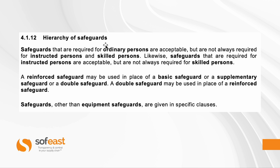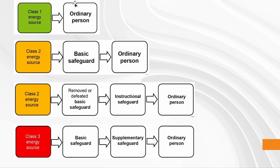For ordinary persons, certain safeguards are required. For instructed persons, typically fewer or weaker safeguards are acceptable. For skilled persons, even fewer. I'll focus on the ordinary person case. If it's a Class 1 energy source — not going to hurt anyone, not going to damage equipment — you actually don't need a safeguard.